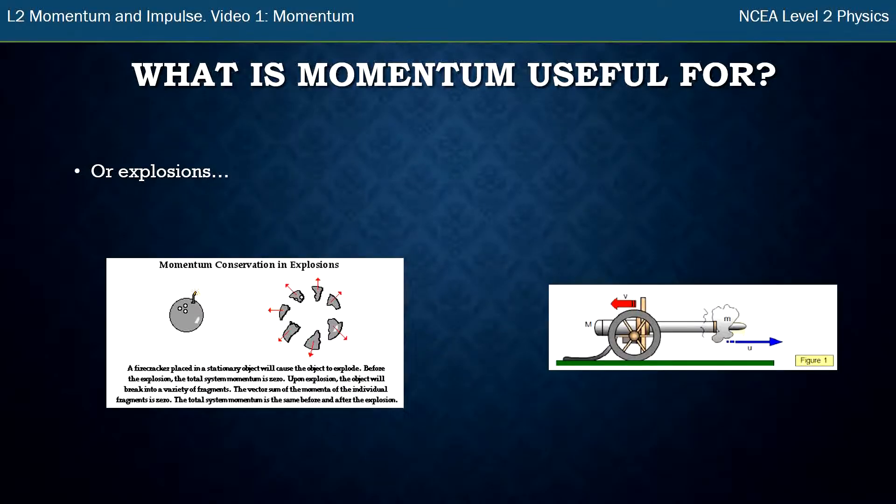But then something happens and they all move in different directions. So here we have some sort of grenade that explodes and all the fragments move out. Or you could have a cannon where the shell is fired forward, and we have the recoil of the cannon moving backwards. So both of those situations—either collisions or explosions—are useful for momentum.